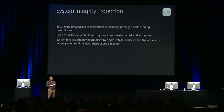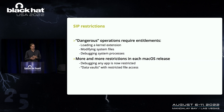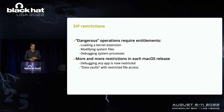SIP is also known as 'rootless' — not because the root user is removed, but because root is less powerful. The way it works is that you now need an entitlement to perform dangerous operations. An entitlement is metadata included when a code signature is generated for an application. For many dangerous operations — like loading a kernel extension, modifying the OS, or debugging a system process — you now need a specific entitlement.